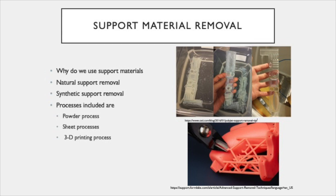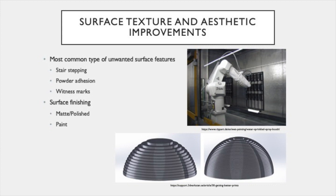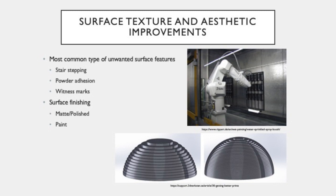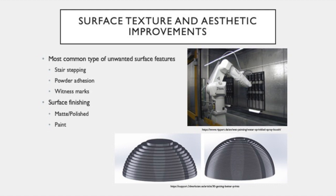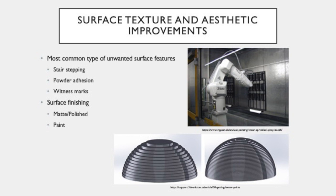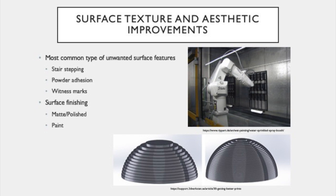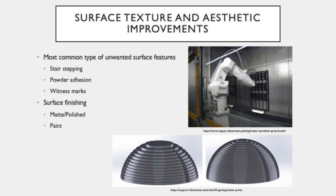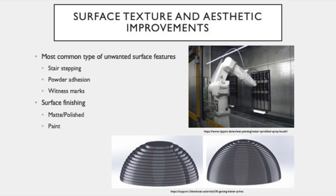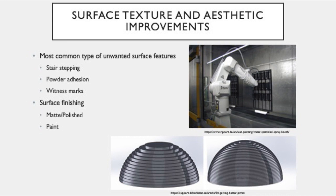Surface texture improvements and surface refinishing in alternative manufacturing post processing are another very important process in industry, helping to combat any flaws associated with additive manufacturing and to improve the aesthetics and performance of parts. The most common types of unwanted surface features include stair steps, powder adhesion, fill patterns, and witness marks caused by support material removal. The desired surface finish can be achieved using several different post processes. If your part needs a matte finish, you can use bead blasting, which not only helps with surface finish but can also remove sharp edges, stair stepping, and improve the surface texture overall.